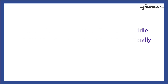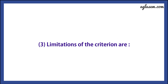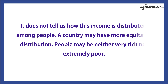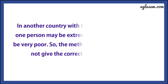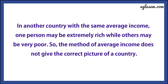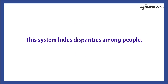The limitations of this criteria are: first, it does not tell us how this income is distributed among people. A country may have more equitable distribution where people are neither very rich nor extremely poor. Second, in other countries with the same average income, one person may be extremely rich while another may be very poor. So the method of average income does not give the correct picture of a country. Third, this system hides disparities among people.